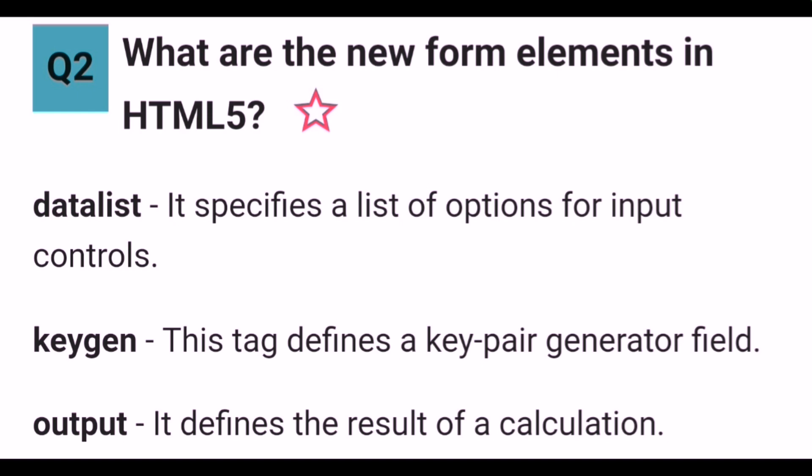What are the new form elements in HTML5? The new form elements are datalist, keygen and output. Datalist specifies a list of options for input controls. Keygen defines a key pair generator field. Output defines the result of a calculation.